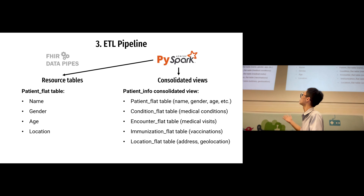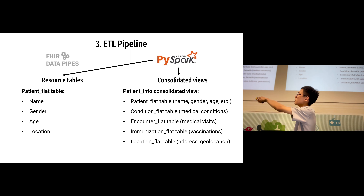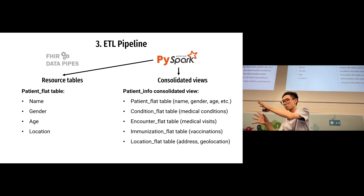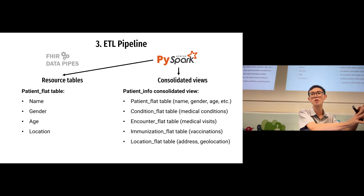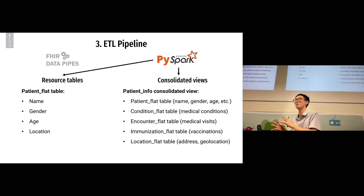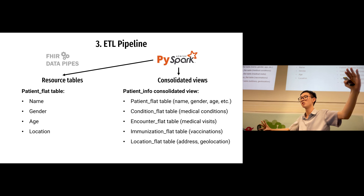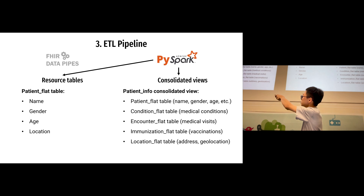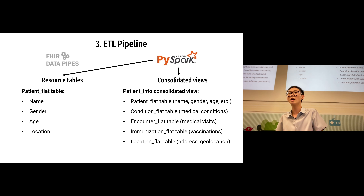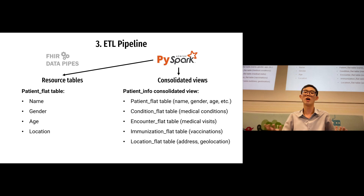Here's an example of what we do in PySpark. The resource tables — for example, the patient flat table — contain information like name, gender, age, and location. However, all these resource tables exist as different tables: a patient table, a condition table, an encounter table. Having many different tables is a bit difficult for visualization. So we also create a consolidated view using SQL, joining most of them together with different subqueries into one giant consolidated table containing patient information, conditions, encounters, immunization, and location. This makes visualization and predictive analytics much easier, while all individual resource tables are still available for querying.